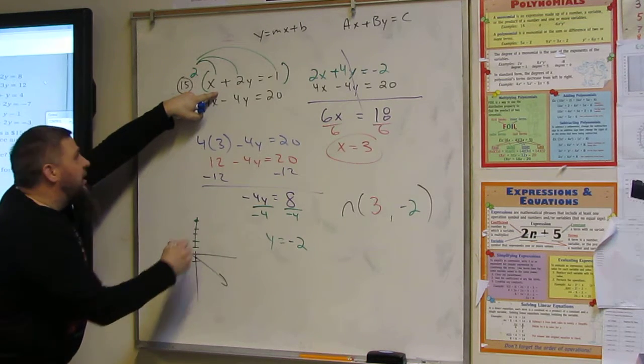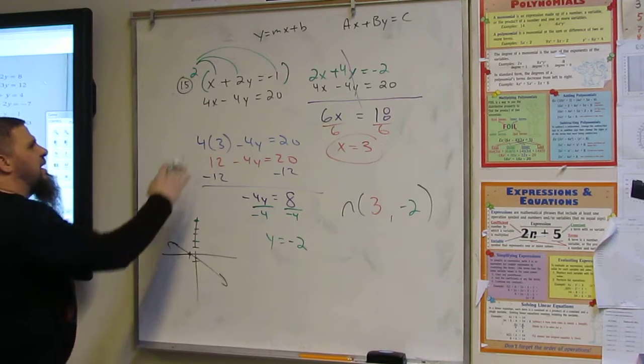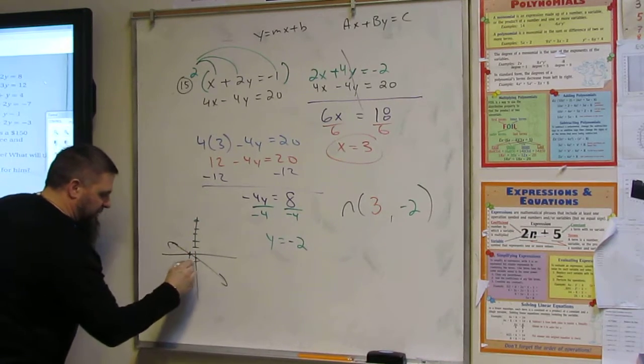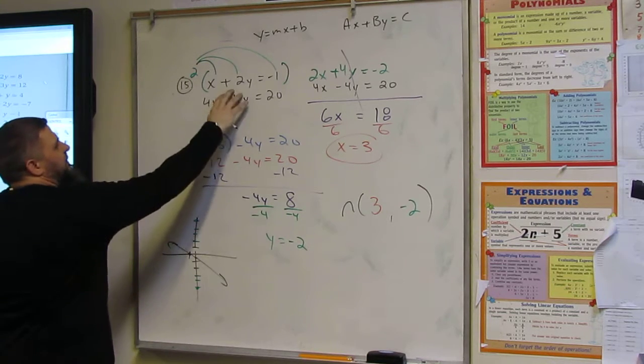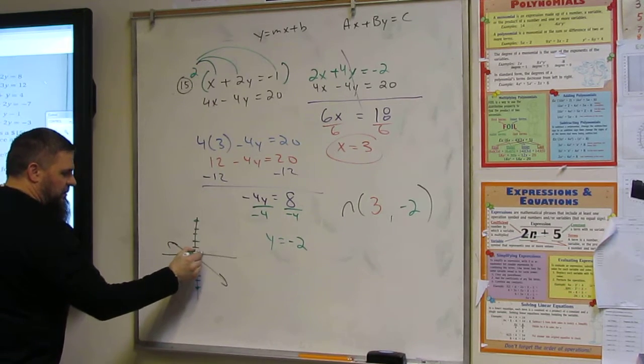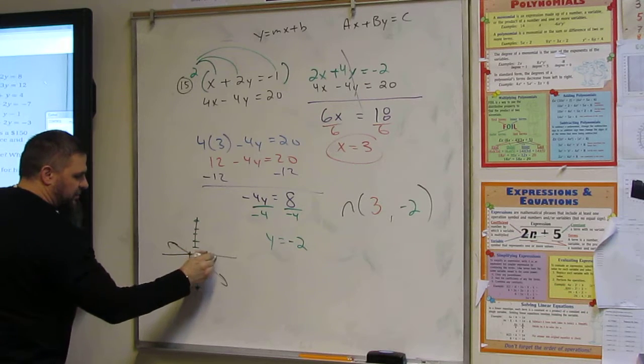Y would be negative five. One, two, three, four, five. And then X would be five. One, two, three, four, five.